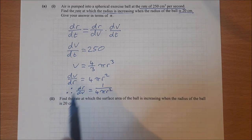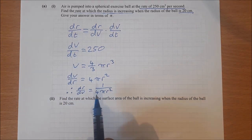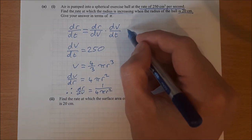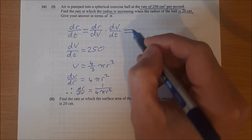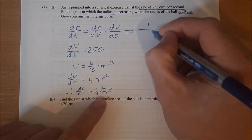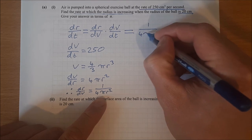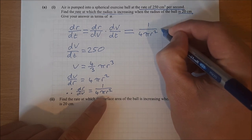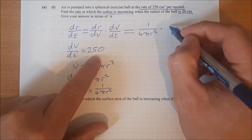Therefore, dr/dv is 1 over 4 pi r squared. So now I have my dv/dt and my dr/dv, so I can fill them in. That is equal to dr/dv, which is 1 over 4 pi r squared, times dv/dt, which is 250.